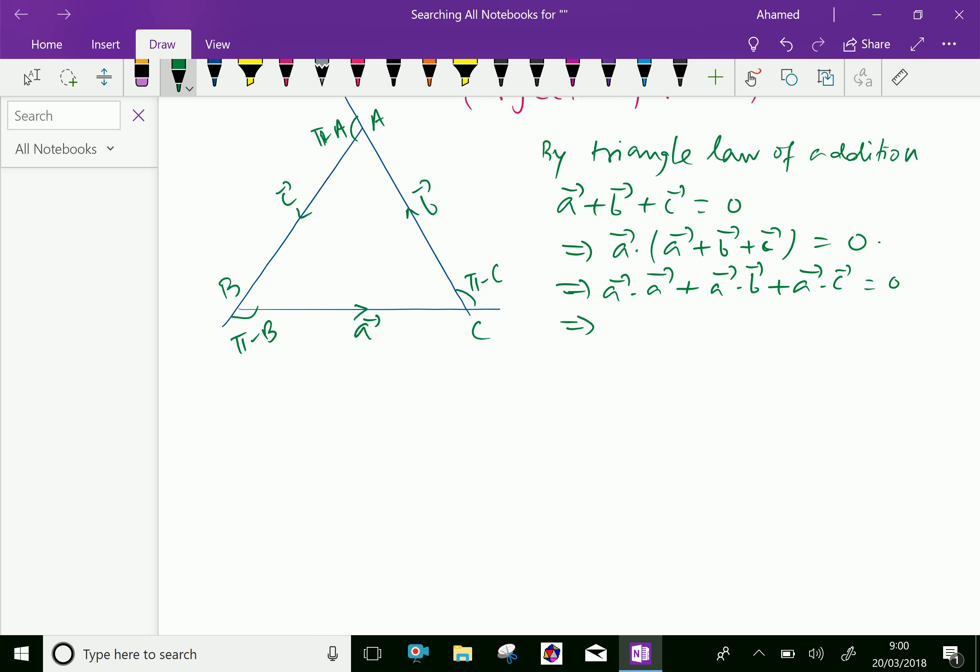Vector a dot vector a equals a squared, plus vector a dot vector b plus vector a dot vector c equals zero.